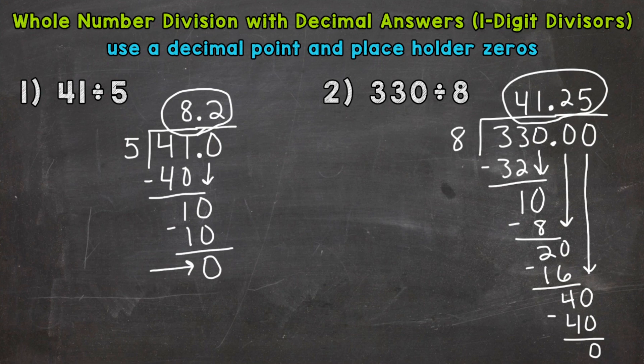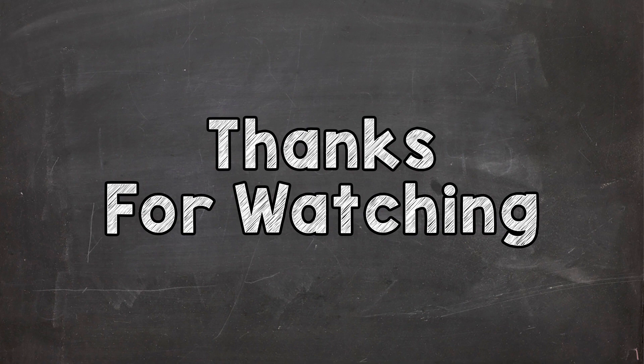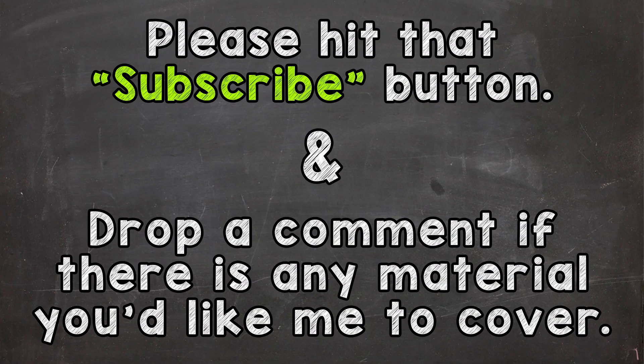So there you have it. There's whole number division with decimal answers. Use decimal points and placeholder zeros to continue through the process until you get that clean cut zero. I hope that helped. Thanks so much for watching. Until next time, peace.